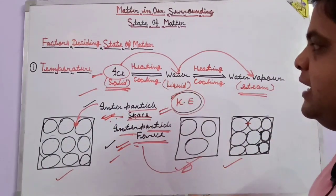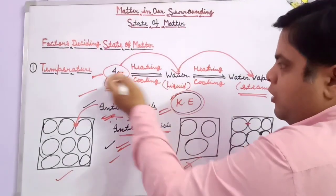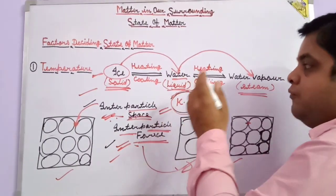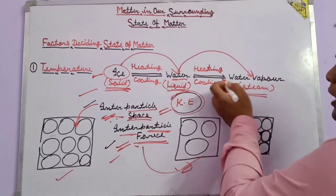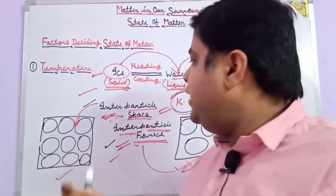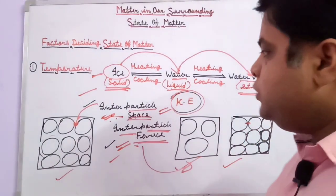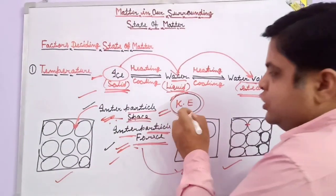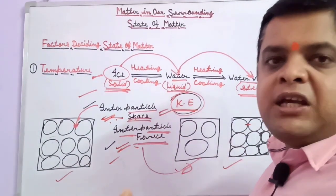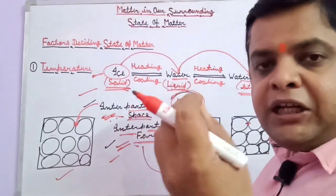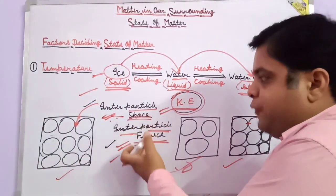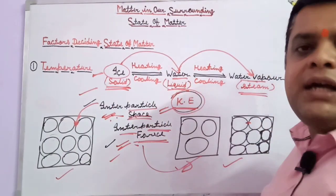When ice is heated, it changes into a different state — into the liquid state of water. All these conditions depend on kinetic energy, because every particle contains a small amount of kinetic energy. After heating a substance, it can change state by the breaking of inter-particle force and the increasing of inter-particle space.